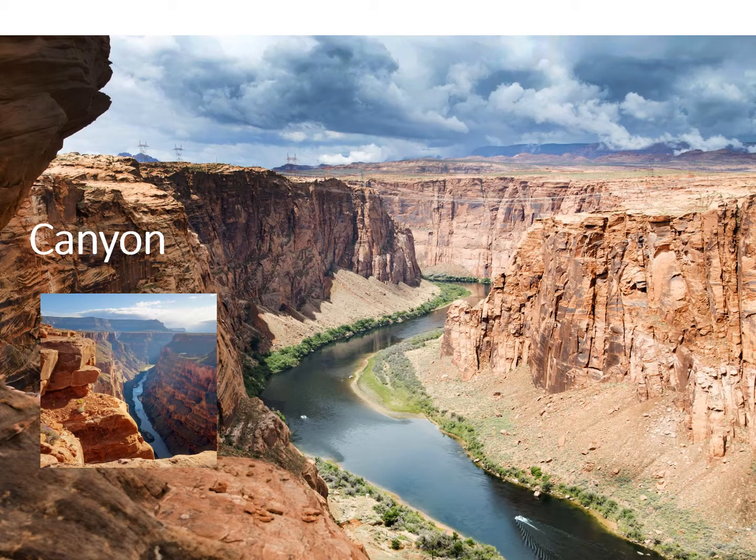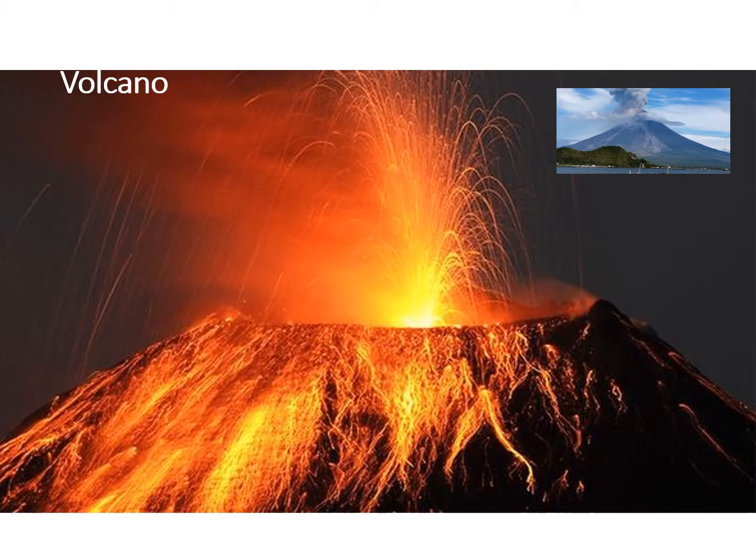A canyon is going to be formed by a river — for example, the Rio Grande is formed by the Colorado River. The water carves out the canyon. We also have a canyon in Texas called the Santa Elena Canyon, which is in Big Bend National Park. I already spoke about volcanoes a little bit, which is typical of a mountain.